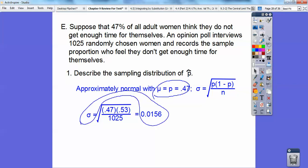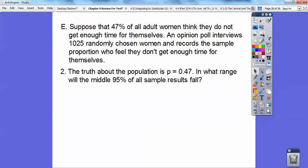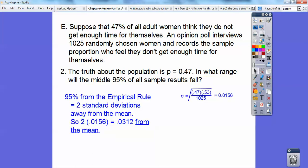When it says describe the sampling distribution, you tell me what the mean is and what the sample standard deviation is. Here's number two. The truth about the population is p equals 0.47. So in what range will the middle 95% of the sample result fall? Do you remember the empirical rule? 95% means two standard deviations away from the mean. So since the standard deviation is 0.0156 from number one, then two of them is going to be 0.0312 away from the mean. Since the mean is 0.47, I'm going to subtract 0.0312 from 0.47 and add 0.0312 to 0.47. So the middle 95% is going to fall within this range from almost 44% up to a little bit over 50%.